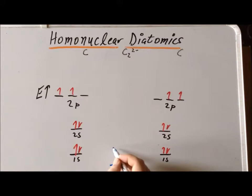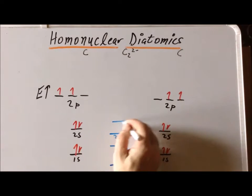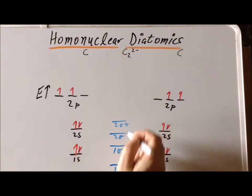So again, our 1s orbitals will interact to form a bonding combination, which is lower in energy, and an anti-bonding combination, which is higher in energy. The same thing happens for the 2s orbitals. We get a bonding combination and an anti-bonding combination, which is higher in energy to sigma star.